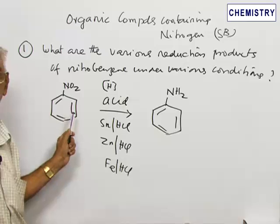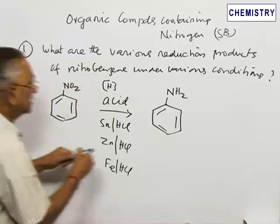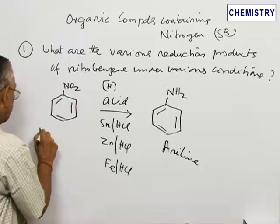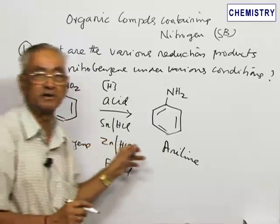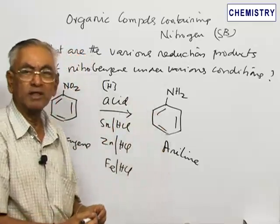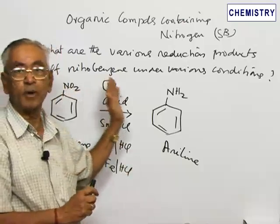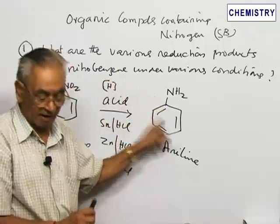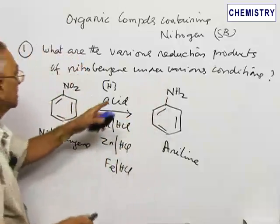Benzene is first converted to nitrobenzene by nitration. Nitrobenzene, also called aminobenzene, is then reduced under acid conditions to give rise to aniline. This is one of the very important reactions of nitrobenzene and one of the most important methods for the synthesis of aniline.